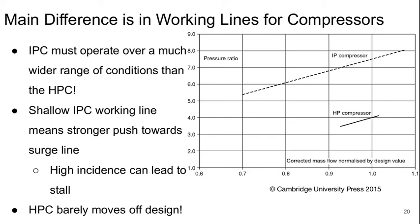The intermediate pressure compressor has to operate over a much bigger range of operating conditions than the high pressure compressor. The high pressure compressor has less than 10% variation from its design point over practical off-design operating points, whereas for the IP compressor it's at least 30%. The IP compressor has a pretty shallow working line, so we get a stronger push towards the surge line at lower mass flows — high incidence can basically lead to stall — whereas the high pressure compressor barely moves off design. The real challenge is in the IP compressor design for these three-shaft engines.